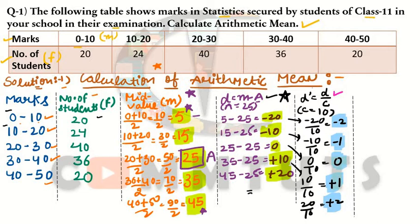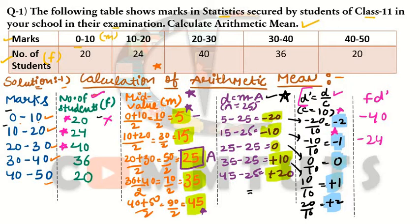Now the last step: multiply d' (step deviations) by the number of students (frequency) to obtain fd'. Frequency 20, d' = −2: 20 × −2 = −40. Frequency 24, d' = −1: 24 × −1 = −24. Frequency 40, d' = 0: 40 × 0 = 0. Frequency 36, d' = +1: 36 × 1 = 36. Frequency 20, d' = +2: 20 × 2 = 40.